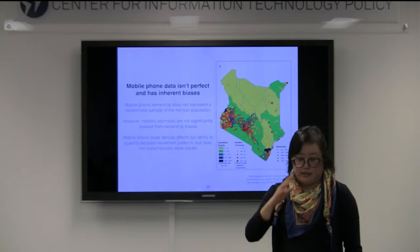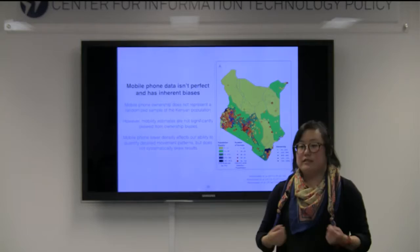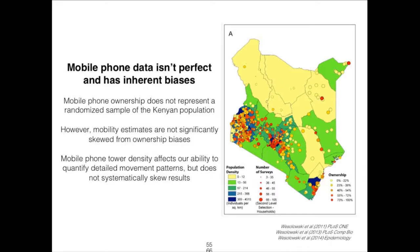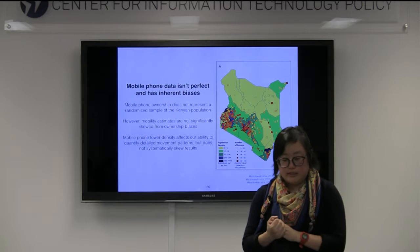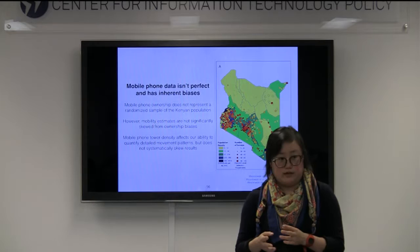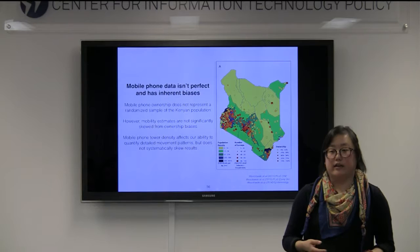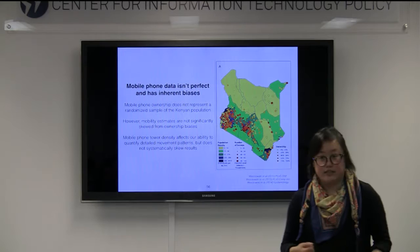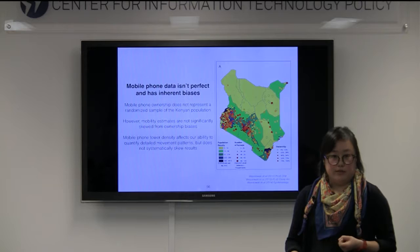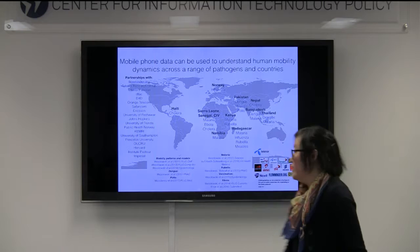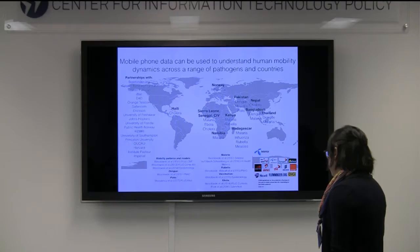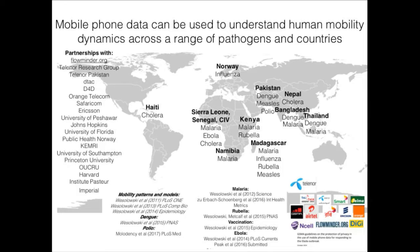Mobile phone data is not perfect and there are lots of biases. They're not necessarily a randomized sample of the population — the census is powered to be representative, but we know these data are not. They're generally skewed towards more urban, educated males particularly in many low-income settings, although that's changing over time. In addition, tower density affects our ability to measure different kinds of movements — if there are no mobile phone towers there, we would not say anybody's traveling there even though people may be. Tower density tends to correlate with population density so we tend to measure where more people are, but it does hinder our ability to say things about certain areas.